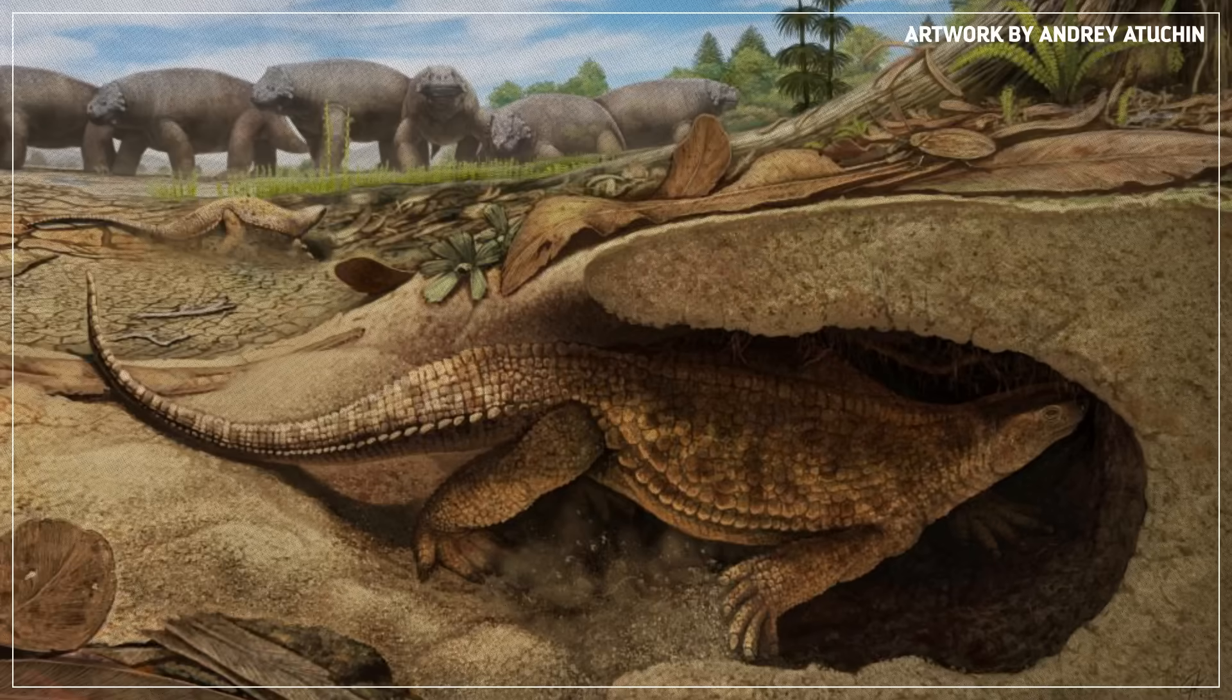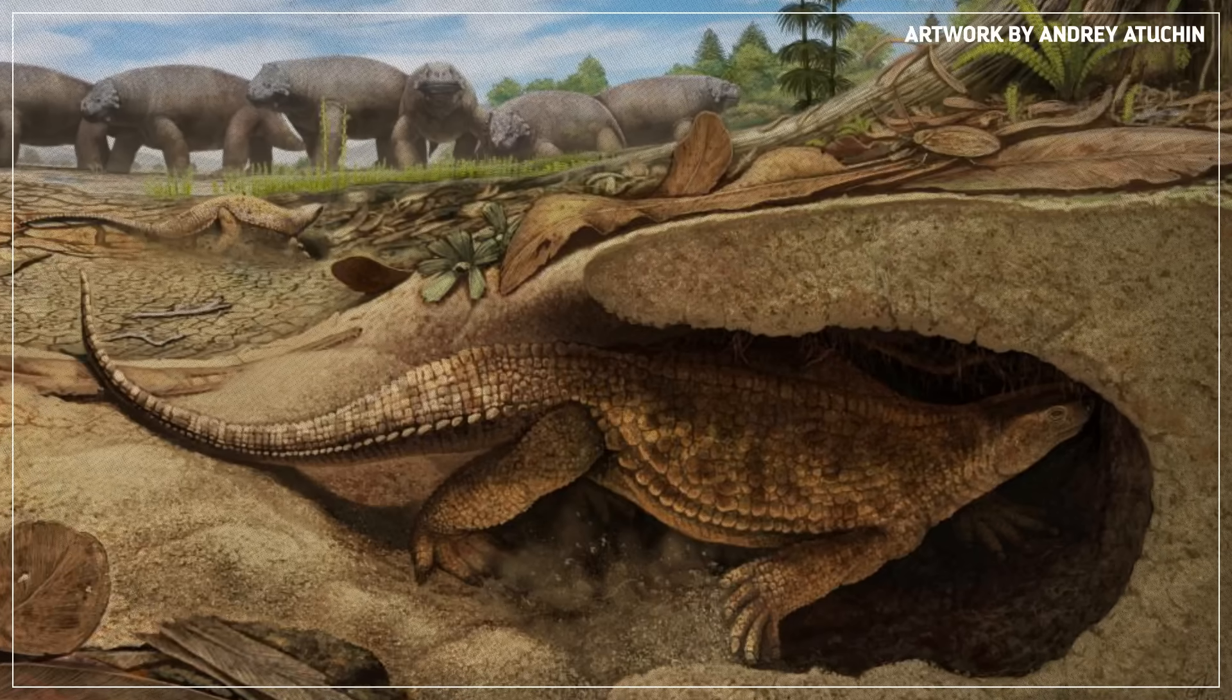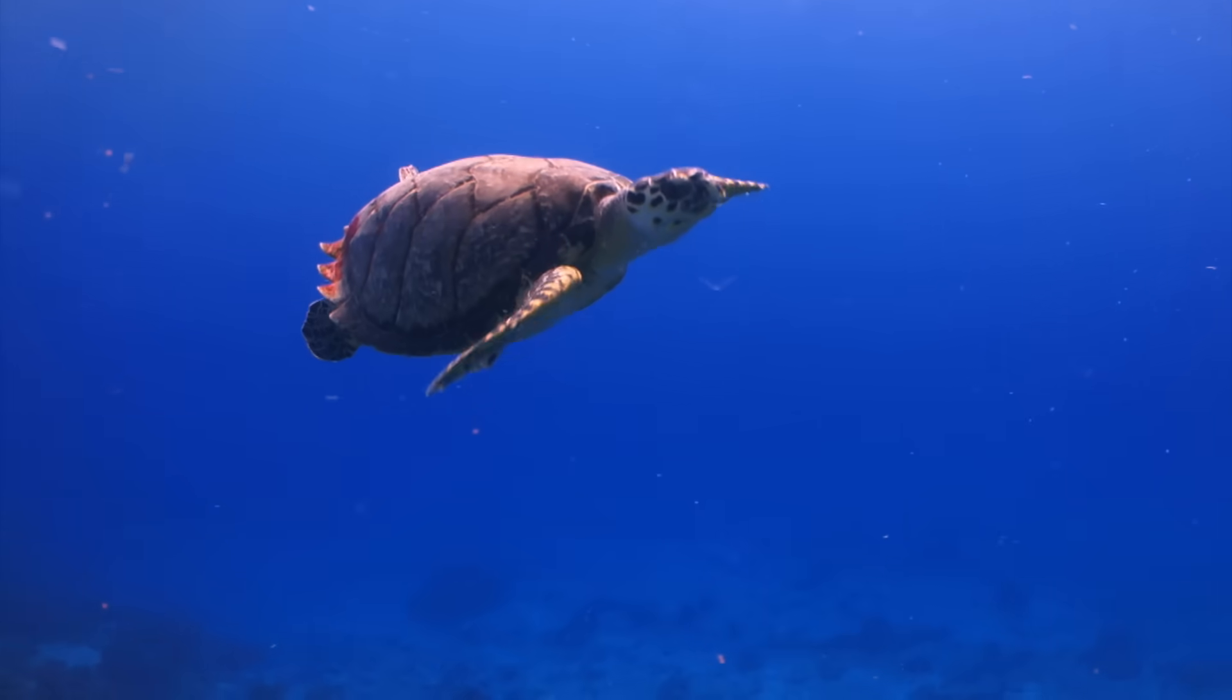And that's when the ribs started to fuse into a plastron, which eventually became a full protective shell. Over time, the evolutionary purpose of the turtle's shell changed, from digging to protection. And turtles as we know them became a thing.